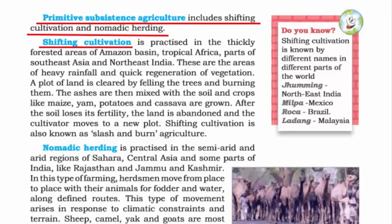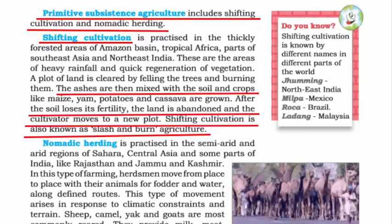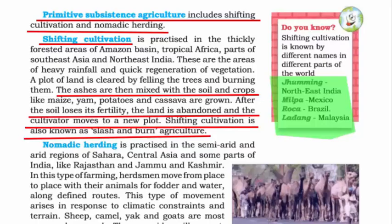Shifting cultivation means you shift your cultivation from land to land. You take the ashes of burned trees, mix them with the soil, grow crops, and after the soil loses its fertility, you move to a new land. This is called shifting cultivation and is also known as slash and burn agriculture — a highly inappropriate way of cultivation because the land is abandoned as soon as it loses its fertility. It is given different names in different parts of the world: in northeastern India it is called Jhuming, in Mexico it is Milpa, in Brazil Roka, and in Malaysia Ladang.